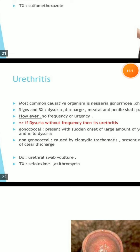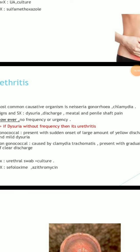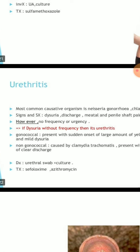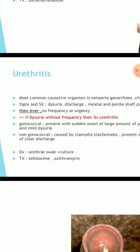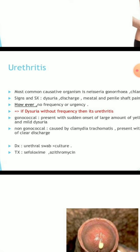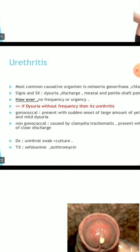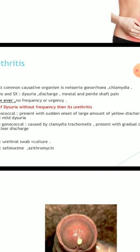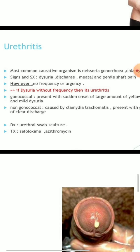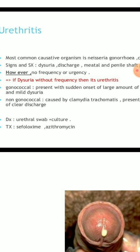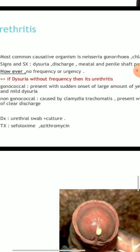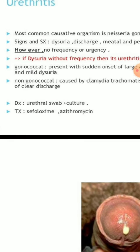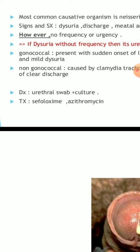Urethritis: most common causative organisms are Neisseria gonorrhoeae and Chlamydia. Signs and symptoms include dysuria, discharge from the meatus, and pain. However, frequency and urgency are absent — dysuria without frequency suggests urethritis. Gonococcal urethritis presents with sudden onset of large amount of purulent discharge and mild dysuria. Non-gonococcal urethritis is caused by Chlamydia trachomatis and presents with gradual onset of clear discharge. Investigations: urethral swab culture. Treatment: cephalexin and azithromycin as antibiotics.